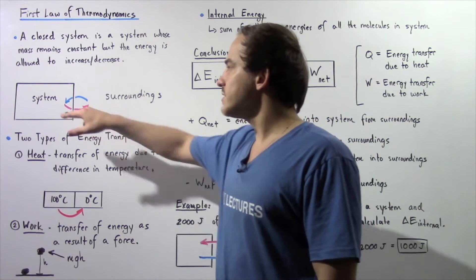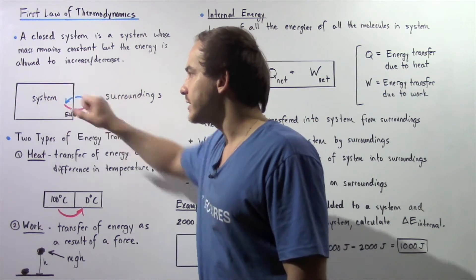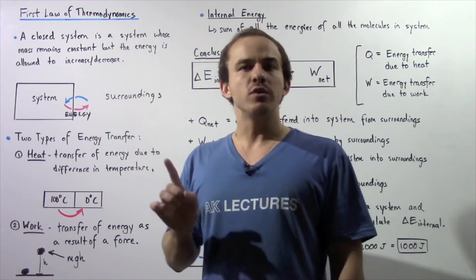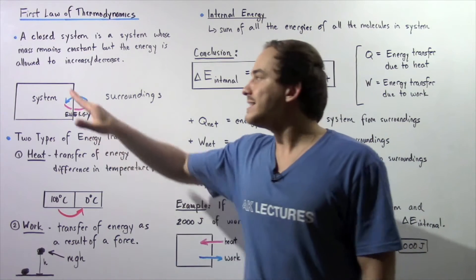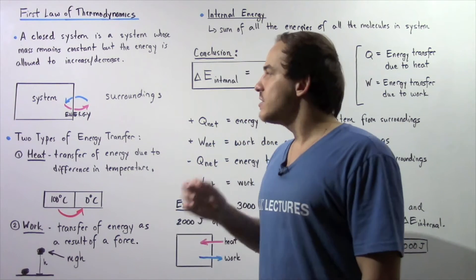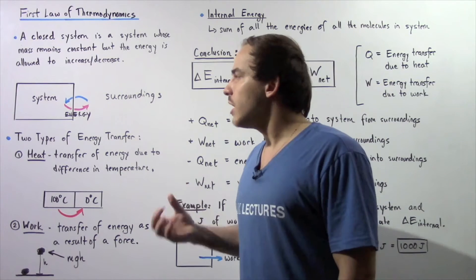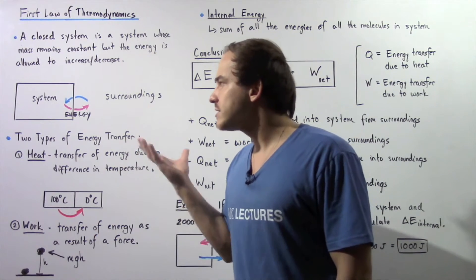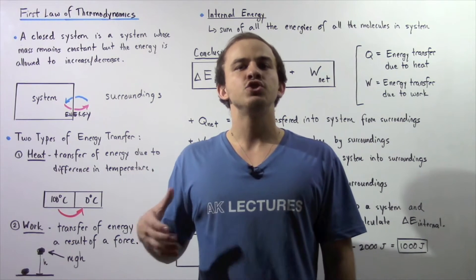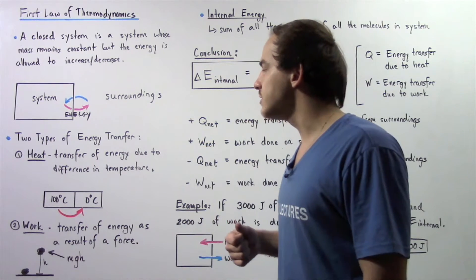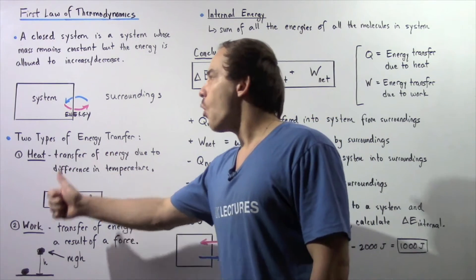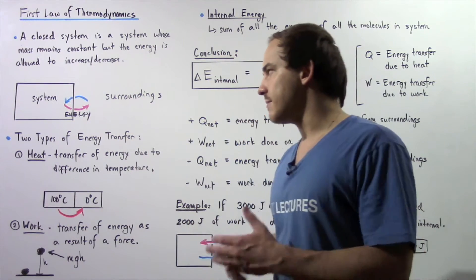Let's suppose we're studying the following object. Everything else outside the system is known as the surroundings. And if this is a closed system, that implies that the number of molecules within our system remains constant, but energy is allowed to exchange with the surroundings. So energy can either flow into our system or flow out of our system.